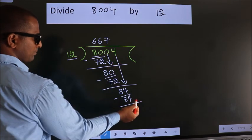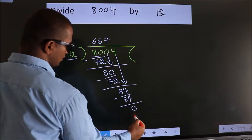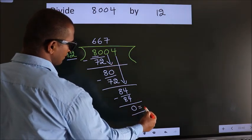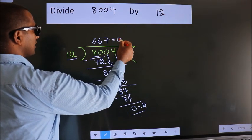No more numbers to bring it down. So we stop here. This is our remainder. This is our quotient.